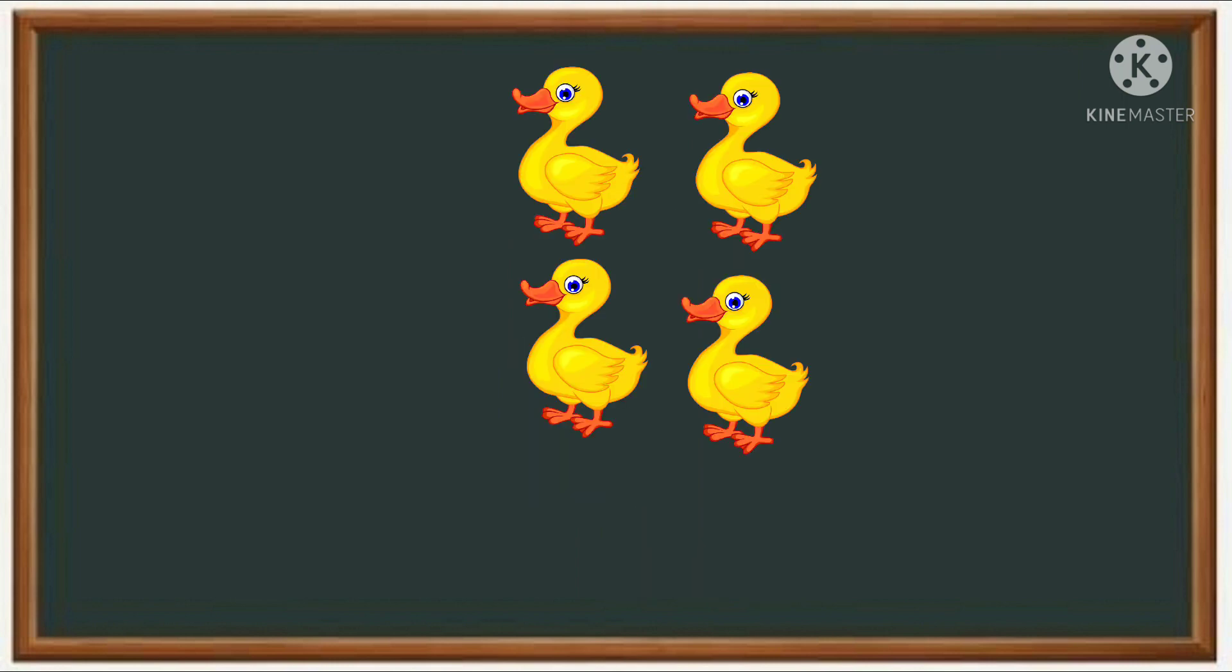Here we have four duckies. Now we are looking for the group of two. Now we have two groups. That means four is even.